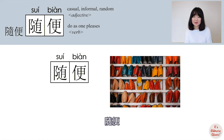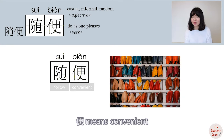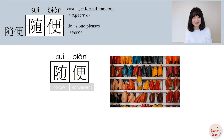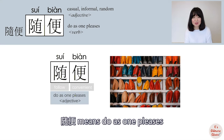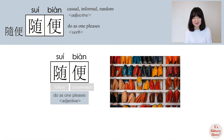随便: 随 means 'follow,' 便 means 'convenient.' Together, 随便 means 'do as one pleases.'